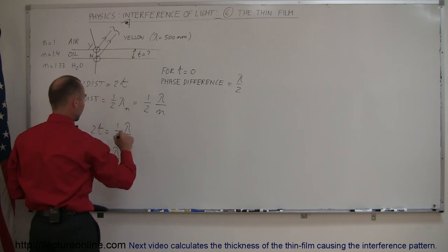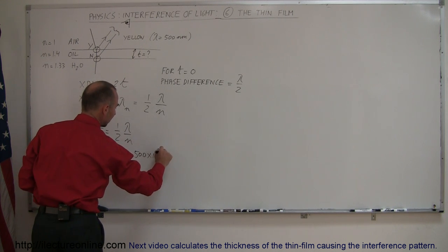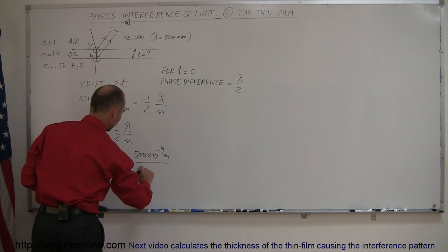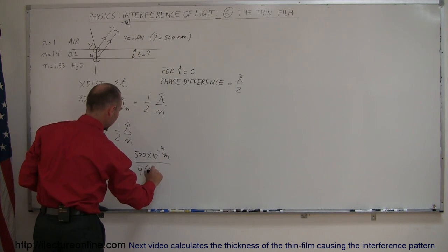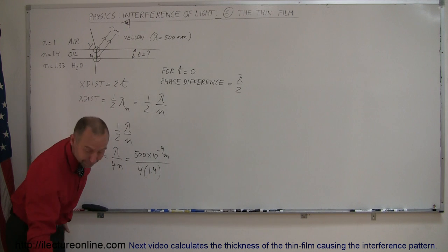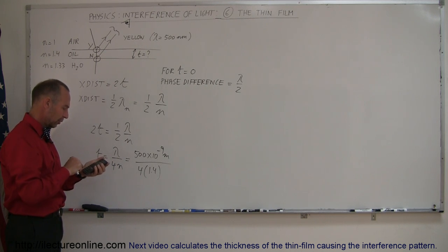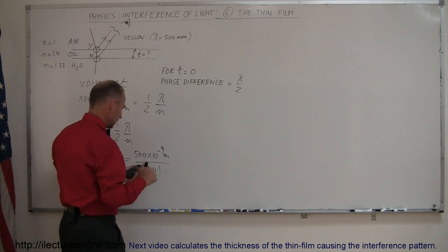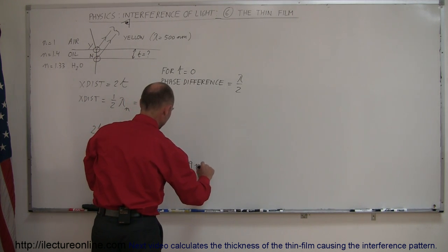And so when we plug in the numbers, we're looking for yellow light, 500 nanometers, which is 500 times 10 to the minus 9 meters, and 4 times the index of refraction of the medium that it travels through, which is oil, 1.4. And here's my calculator. 500 e to the minus 9 divided by 4 divided by 1.4 equals...